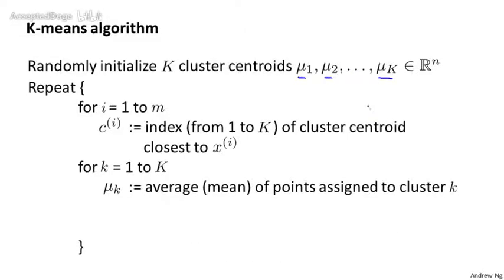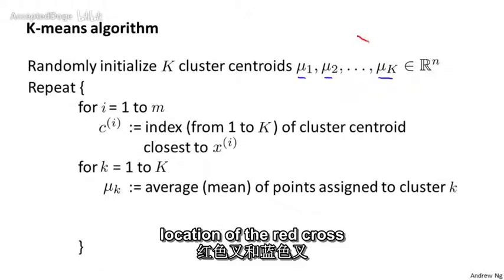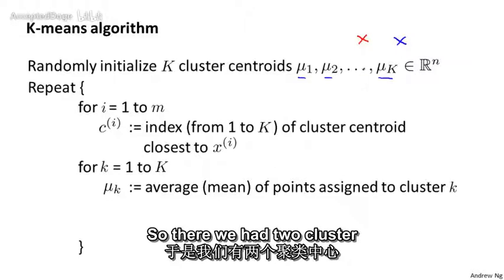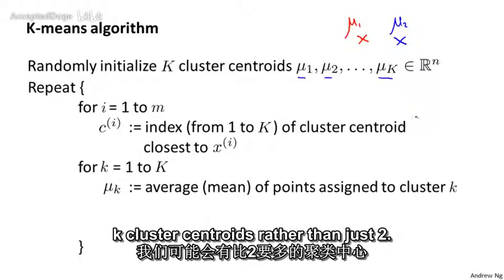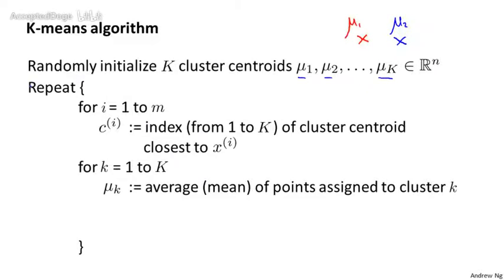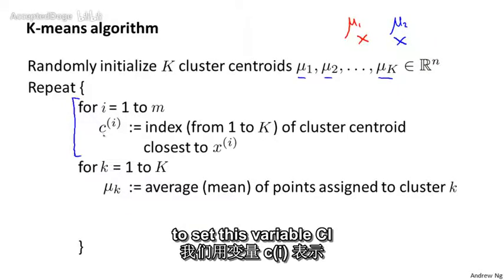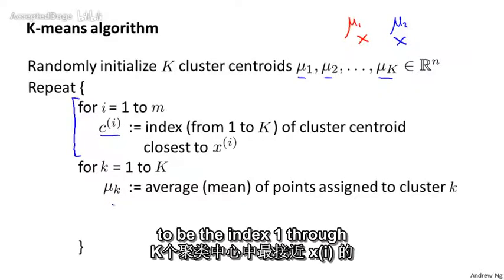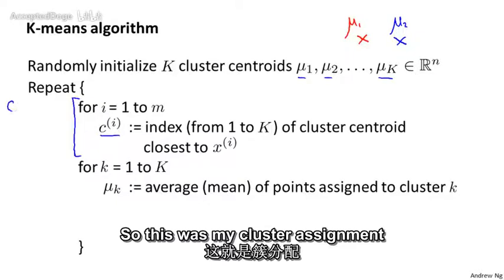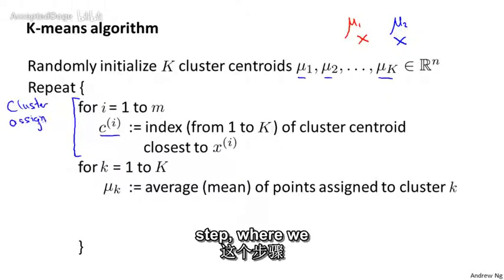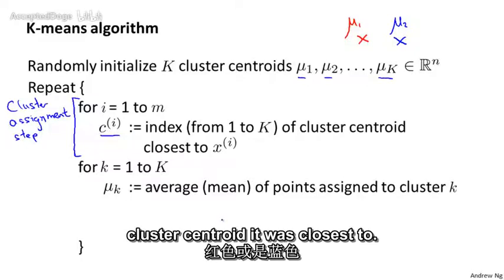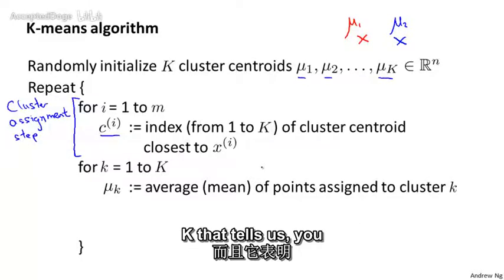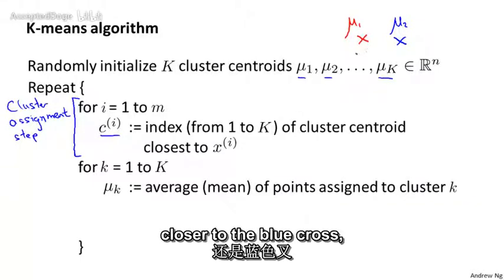In the early diagram, the cluster centroids corresponded to the location of the red cross and the location of the blue cross — the red cross was mu1 and the blue cross was mu2. More generally, we would have k cluster centroids. Then the inner loop of k-means repeatedly does the following. For each training example, I'm going to set the variable ci to be the index 1 through k of the cluster centroid closest to xi. This was the cluster assignment step, where we took each of my examples and colored it either red or blue depending on which cluster centroid it was closest to.